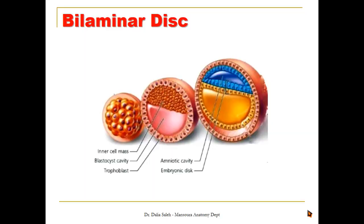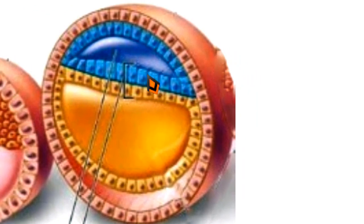Looking at this diagram, we can see different stages of development. The morula is made of a ball of cells within the zona pellucida — about 16 to 32 blastomeres. When they acquire a cavity, they form the blastocyst, with cells arranged into an outer trophoblast layer and an inner cell mass. The inner cell mass then differentiates into two layers to form the bilaminar disc: the dorsal layer called the epiblast and the ventral one called the hypoblast. At the same time, two cavities appear: the dorsal amniotic cavity and the ventral yolk sac cavity.